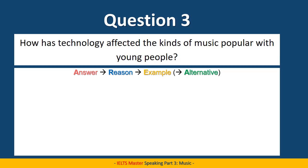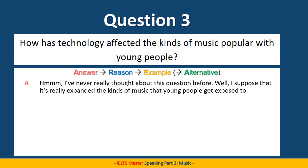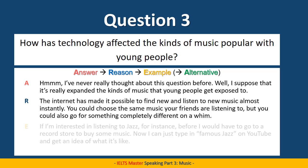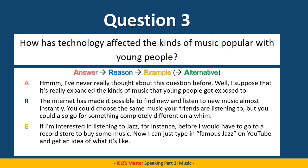Question three: how has technology affected the kinds of music popular with young people? I've never really thought about this question before. Well, I suppose that it's really expanded the kinds of music that young people get exposed to. The internet has made it possible to find and listen to new music almost instantly. You could choose the same music your friends are listening to, but you could also go for something completely different on a whim. If I'm interested in listening to jazz, for instance, before I would have to go to a record store to buy some music — now I can just type in 'famous jazz' on YouTube and get an idea of what it's like. 'On a whim' means a quick decision you're making in the moment; it's not a planned decision.